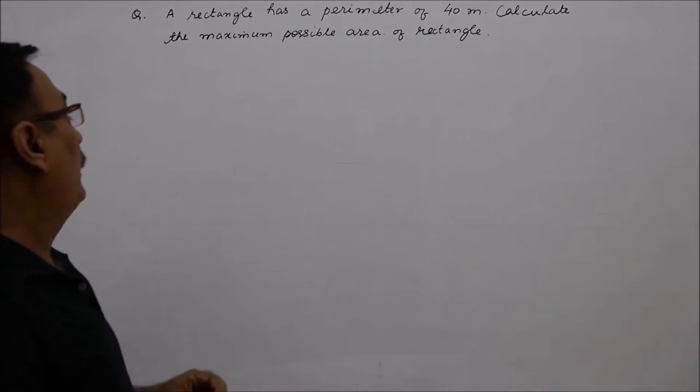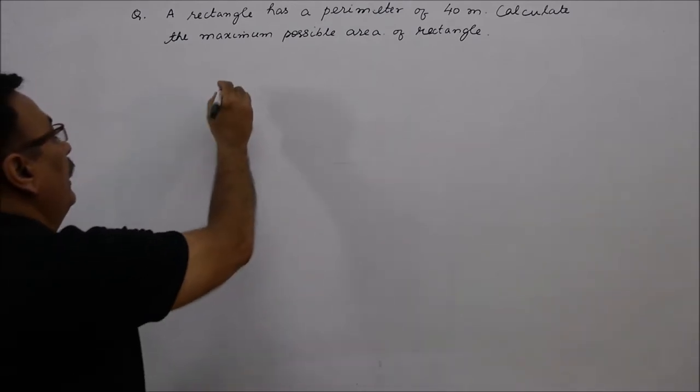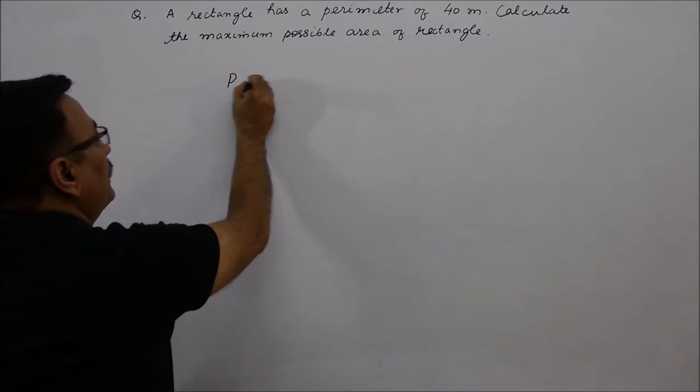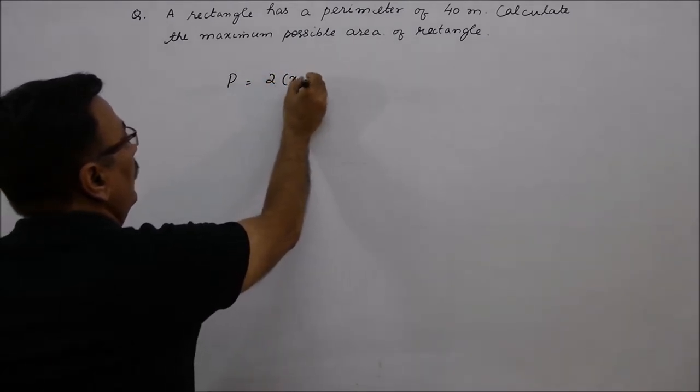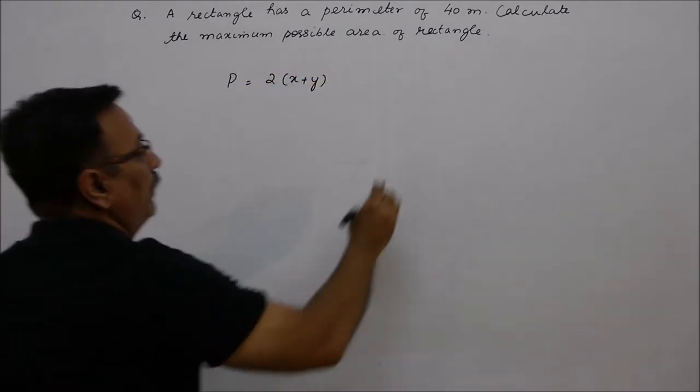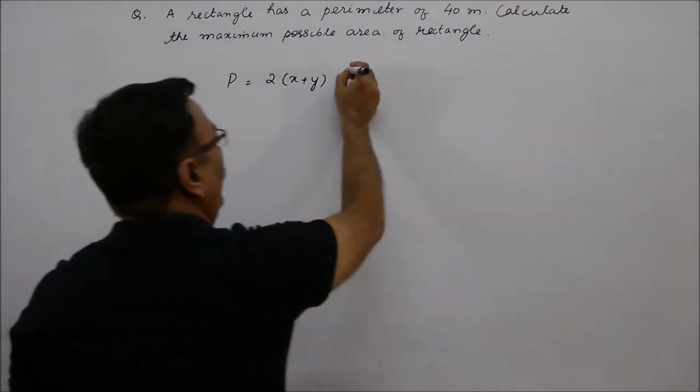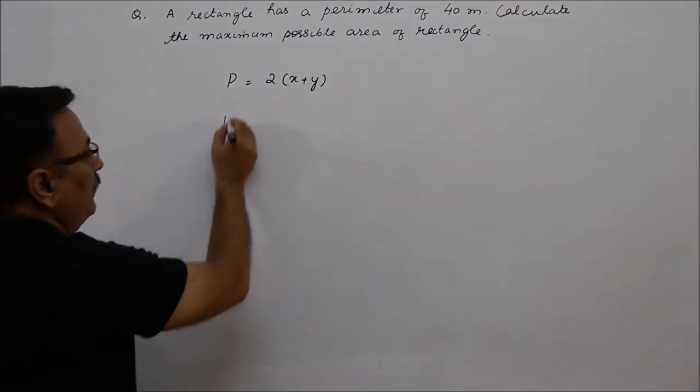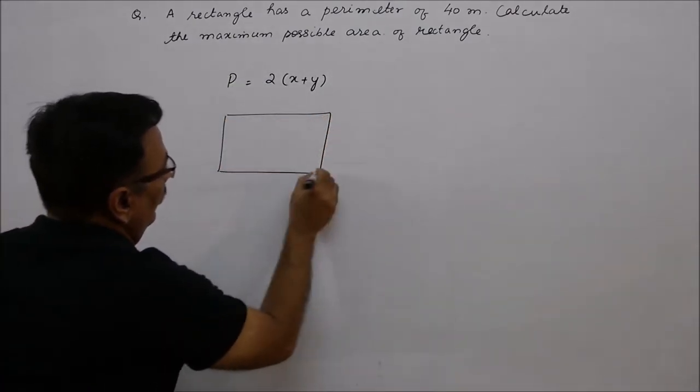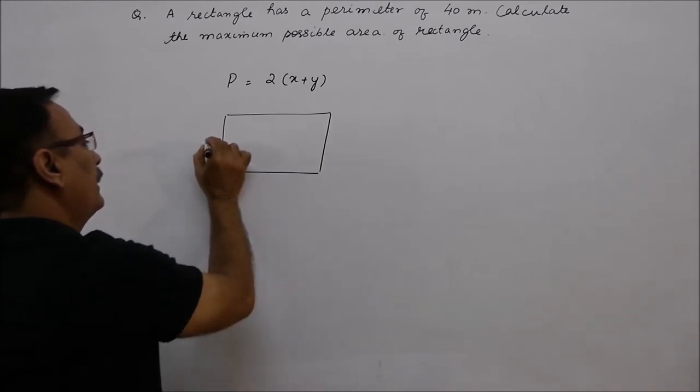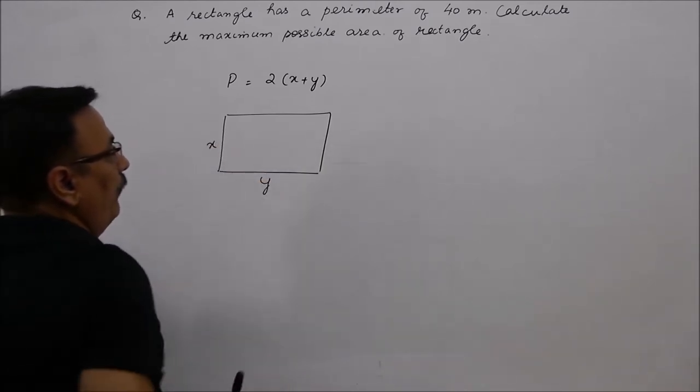So here, we know what is the formula for perimeter. Perimeter is equal to 2 times x plus y. So, if you have a rectangle, you have got a rectangle like this. Its breadth is x and length is y.